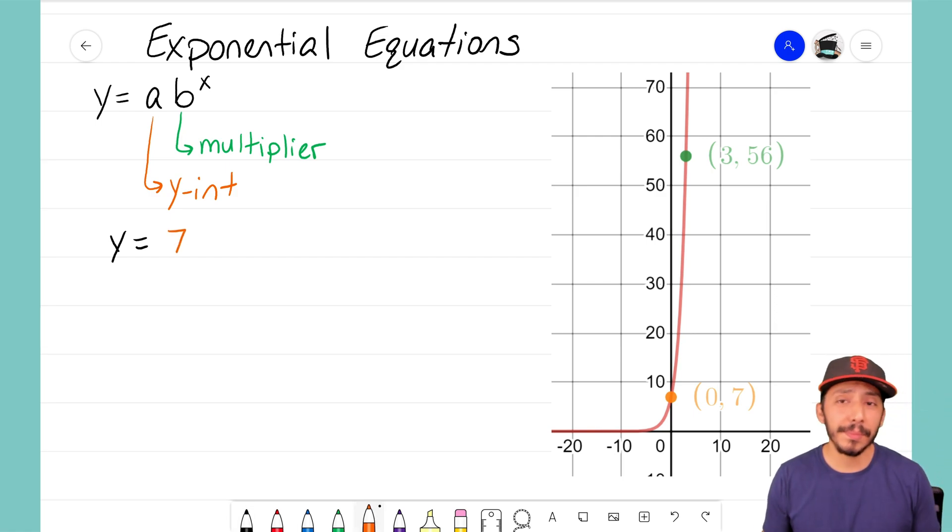Now I do not know what my multiplier is here. I see that I start at the zero term and that we're at 7, and then we jump all the way to the third term and we're at 56. If you watch one of my previous videos you might have remembered me saying pick a point to find the multiplier - take a point and divide it by the one before it.